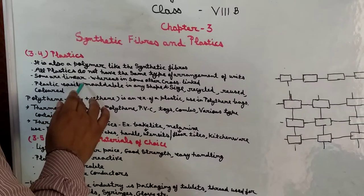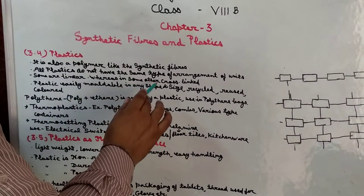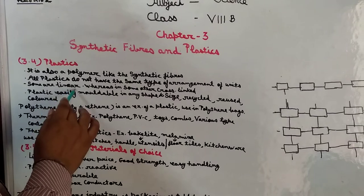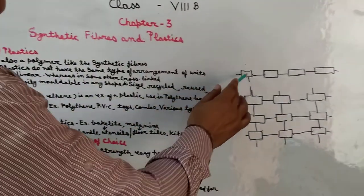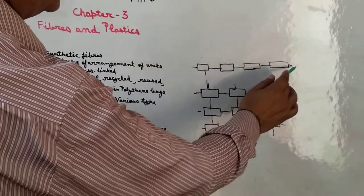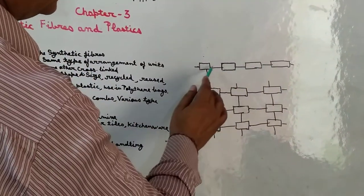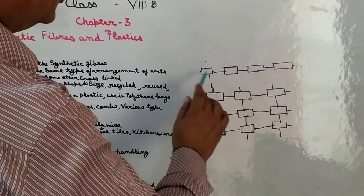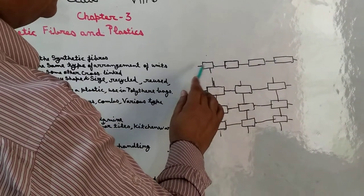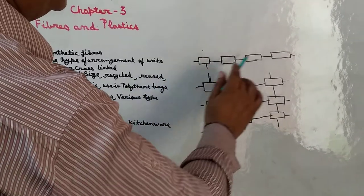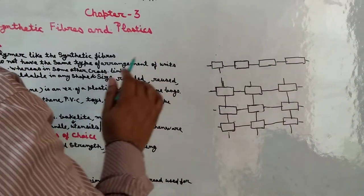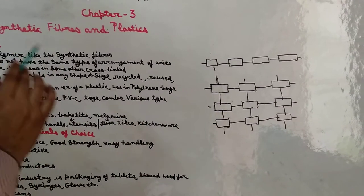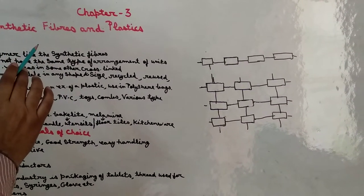Some are linear, whereas some other are cross-linked. Linear type में units एक line के रूप में आपस में जुड़ी होती हैं. इसलिए इसको linear arrangement of units के नाम से जाना जाता है.